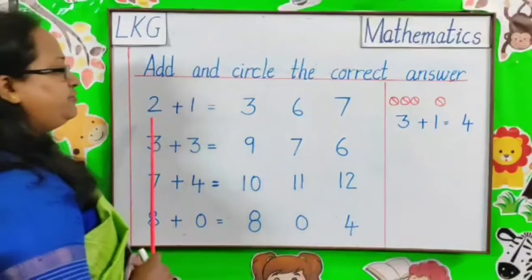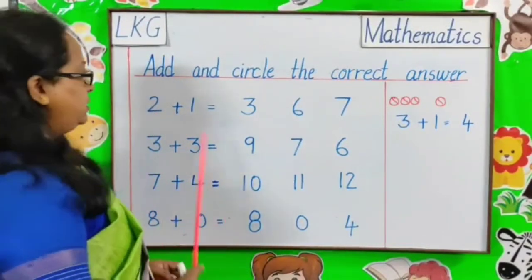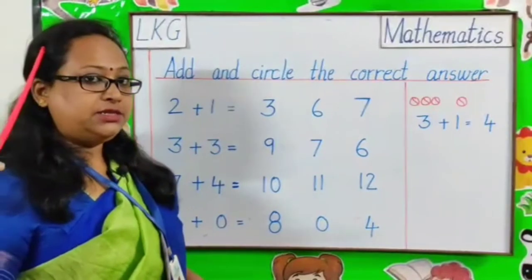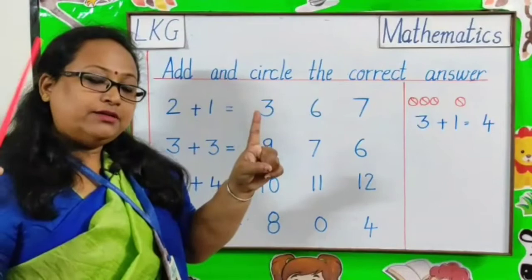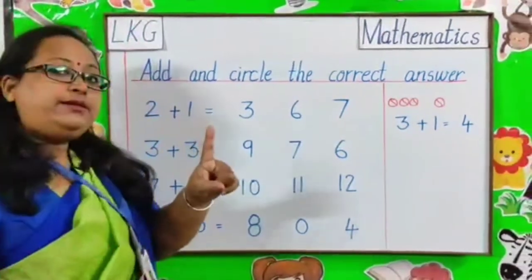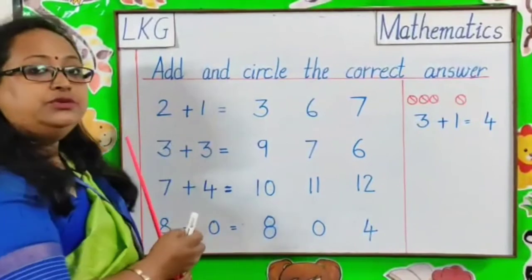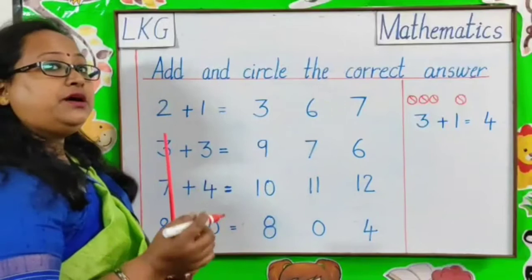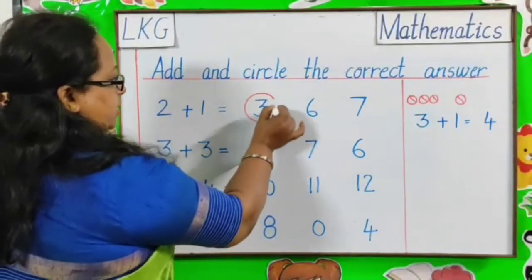Let's start. So, our first question is 2 plus 1. How we will count it? The first number is 2, 2 in my mind. Next number is 1. So, 1 finger. 2 in my mind, 1 finger. Let's count it together. 2, then 3. So, 2 plus 1 is equal to 3. We have to choose the correct answer here. So, correct answer is 3. We have to circle number 3.